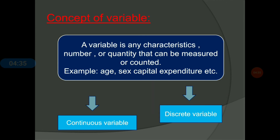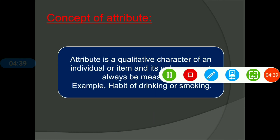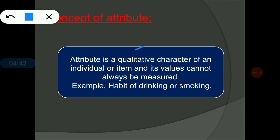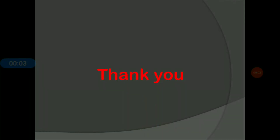Now let's look at attribute. Attribute is a qualitative character of individual data. The basic difference is that variable is a quantitative character while attribute is a qualitative character of an individual, which cannot be measured and can only be observed. Attribute indicates only the quality of the data. For example, the habit of drinking or smoking of an individual is an attribute — it indicates quality only, not quantity.